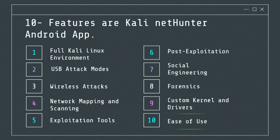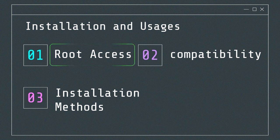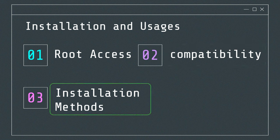Kali NetHunter provides access to a repository of NetHunter-specific tools and updates with a user-friendly interface for managing tools and settings. It requires a rooted Android device. Designed for a wide range of devices, certain features may require specific hardware. Installation can be done via the NetHunter Installer or manually through custom recovery tools like TWRP.